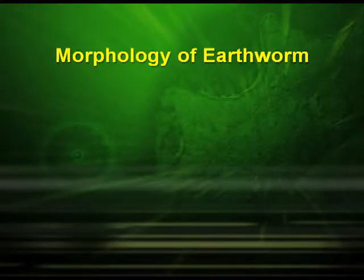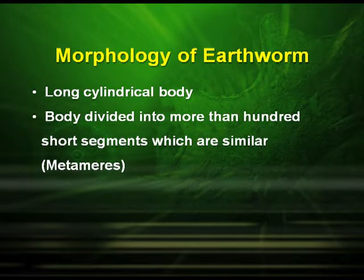There is a distinct difference between morphology — the study of the external structure of organisms — and anatomy — the internal structure of organisms. Regarding the morphology of earthworm, they have a long cylindrical body and the body is divided into more than 100 short similar segments known as metameres.